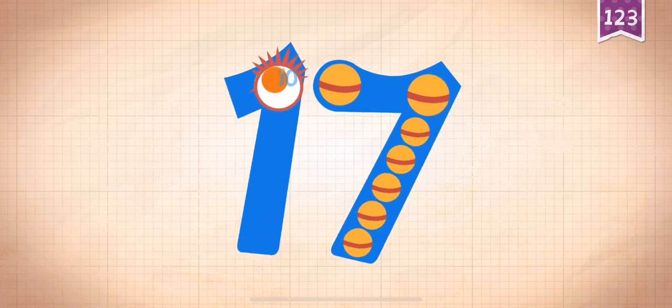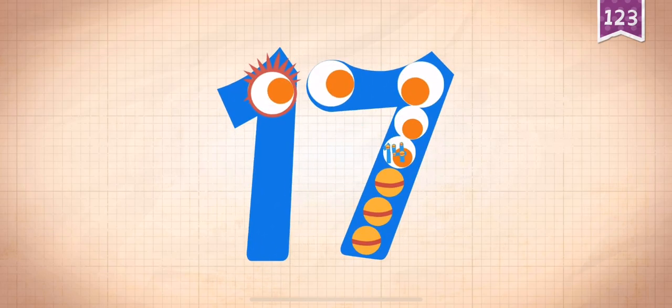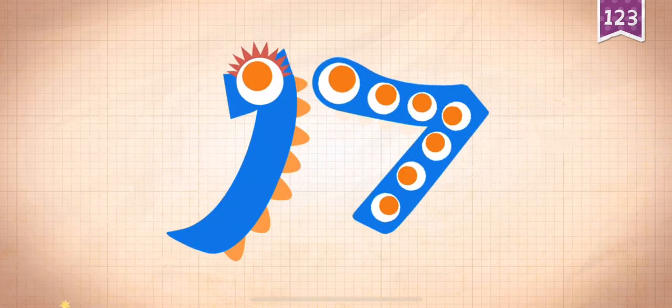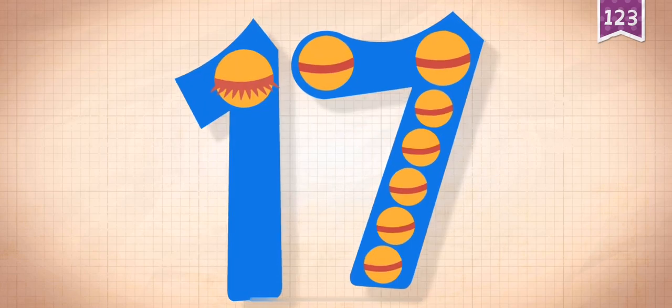15 plus 2 equals seven, thirteen, fourteen, fifteen, seventeen. Seventeen! Seventeen!